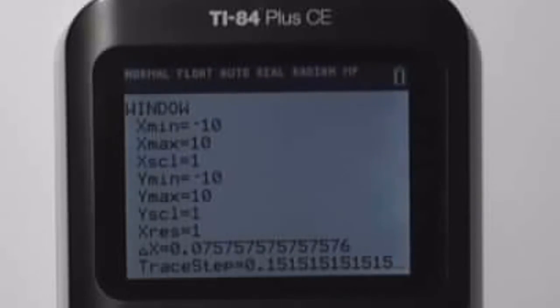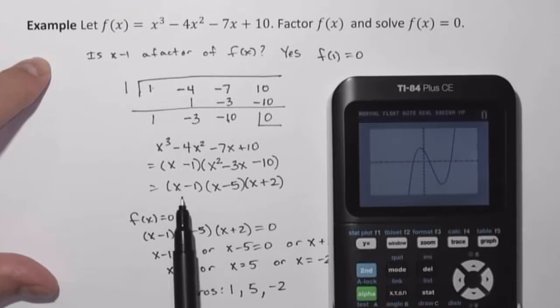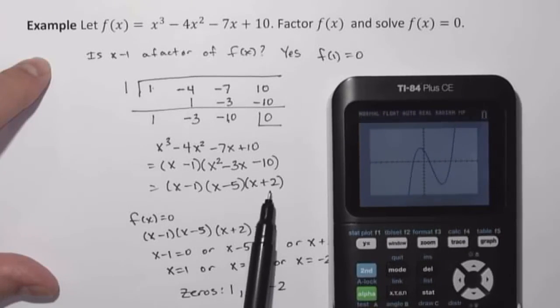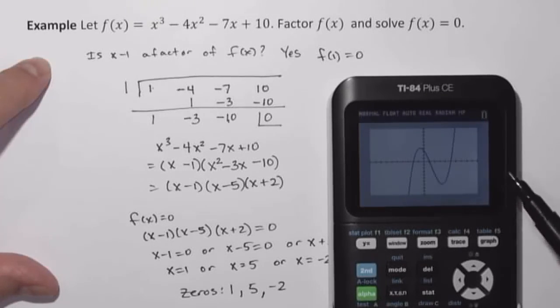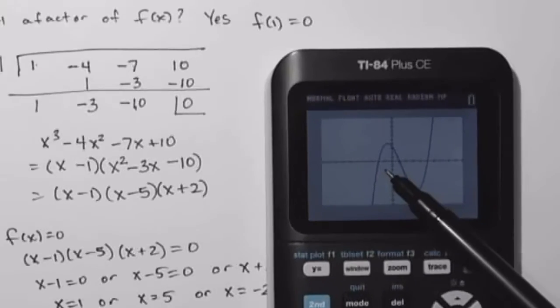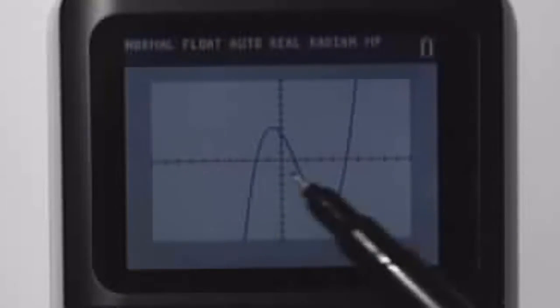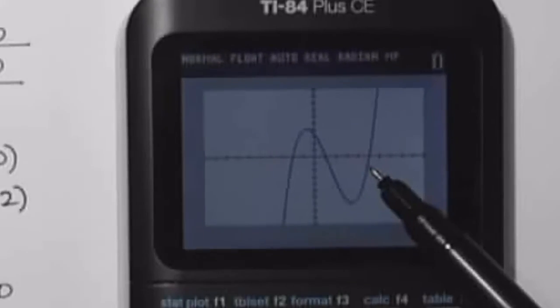But I'm going to expand my y values in the window. So let's go negative 30 to 30 with a scale of 3. So here's our graph. Now again, we found that the factors are x minus 1, x minus 5, x plus 2. The zeros are 1, 5, and negative 2. Well, look at the graph. We have an x-intercept of negative 2, 0, 1, 0, and 5, 0.